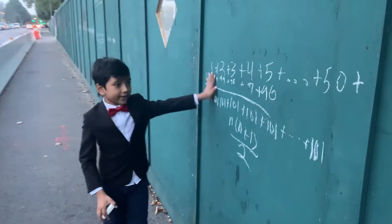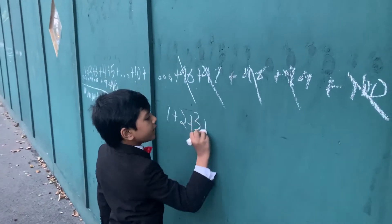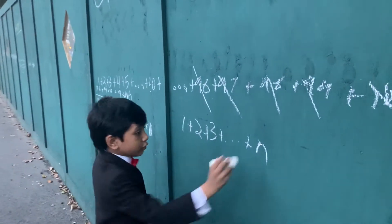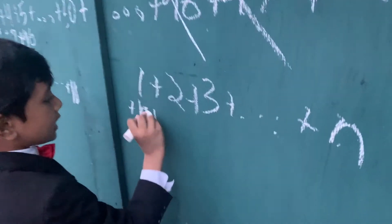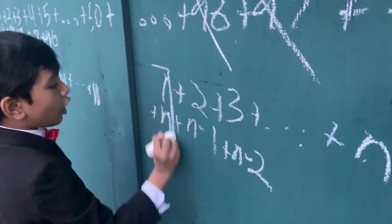Now, let's see the proof for this equation. 1 plus 2 plus 3 plus, let's say, all the way to some number n. Now, if you took the first number and paired it up to the last number, you would see 1 plus n, 2 plus n minus 1, 3 plus n minus 2, and so on.